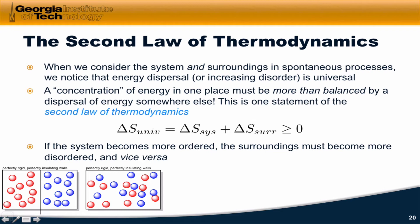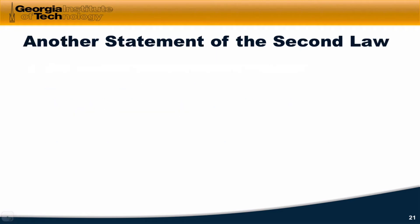Another way of thinking about this is that if the system becomes more ordered, the surroundings must become more disordered and vice versa. There are many different ways to think about the second law. Another statement uses Boltzmann's definition of entropy.